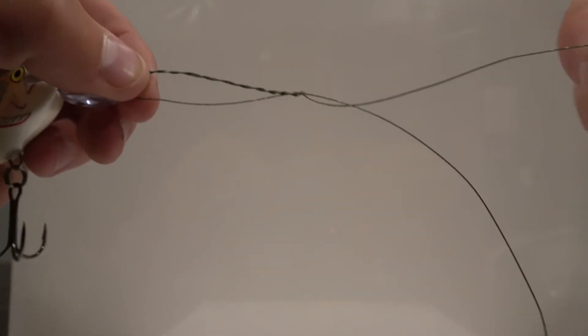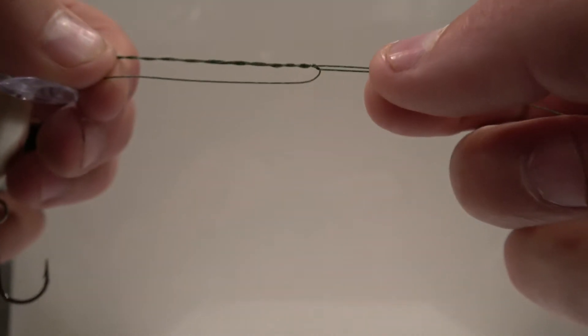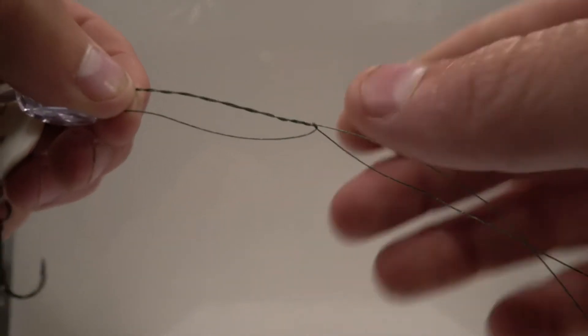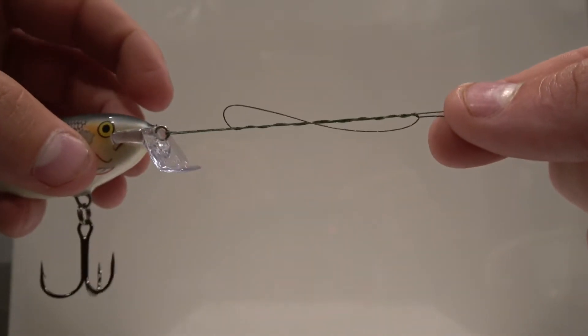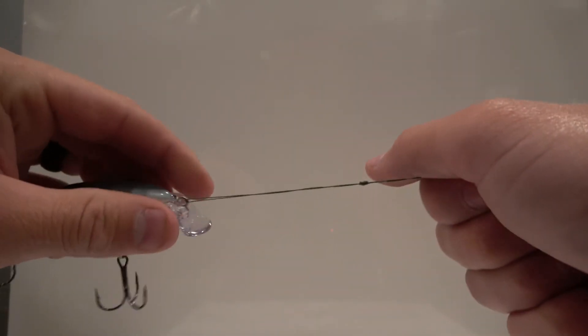And then give her a little pull, and then I'll take and grab the tagline and the main line, let go of it with my left hand and just start pulling. And once it gets semi tight like so, I'll lick it, put it in my mouth and moisten the line. And then I'll finish pulling it.